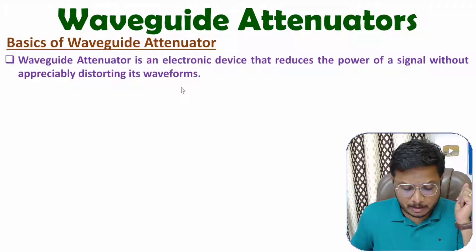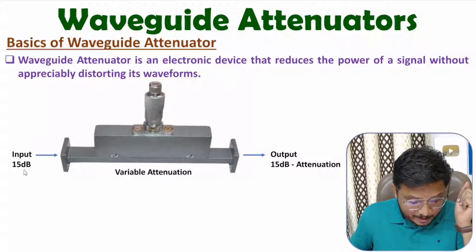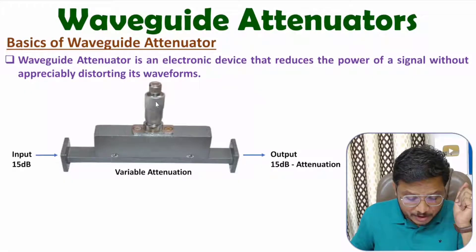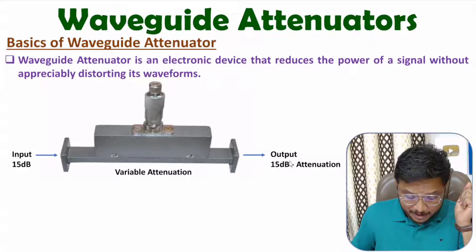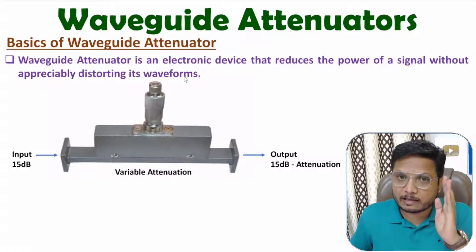Let me take an example. You might have used a variable attenuator in your lab. Assume we have an input signal with a power of 15 dB. At the output side, power will be 15 dB minus attenuation. With a variable attenuator, by changing the probe, we can change the attenuation value. If we have an attenuation of 5 dB, then at the output side 15 minus 5 means a 10 dB signal will be there, having the same waveform as the input. We are just attenuating the input signal.